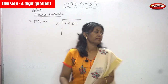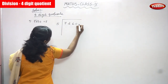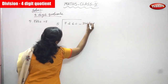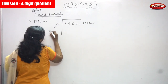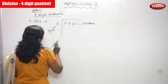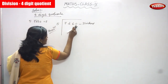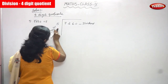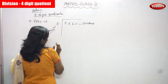Let's start the problem. The first term is dividend — D-I-V-I-D-E-N-D, dividend. And this is the divisor — D-I-V-I-S-O-R, divisor. So a four-digit dividend divided by a one-digit divisor gives a four-digit quotient. Let's start the problem.